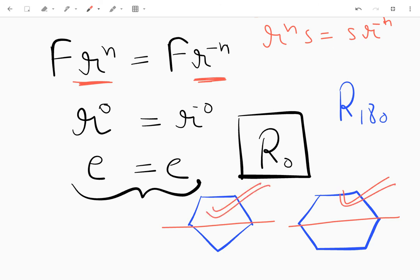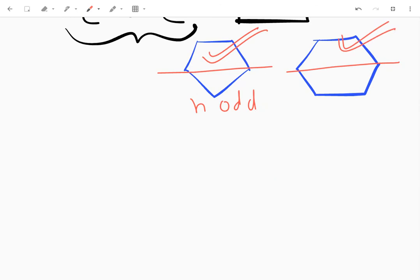So what this tells me is that when n is odd, then r_0 will be the only rotation that will commute with all the flips as well as all the rotations. But when n is even, then I'll have r_0 as well as r_180.